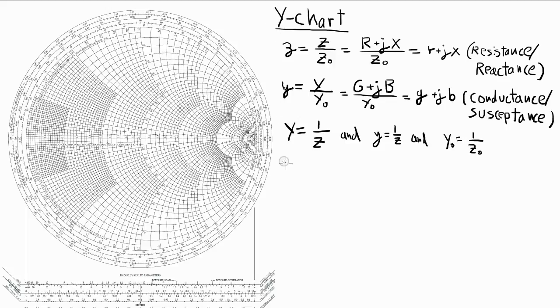So up to now we've defined gamma using impedances. We can also define gamma using admittances, and there is a one-to-one mapping.